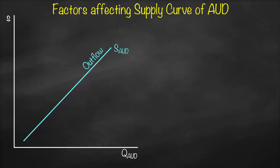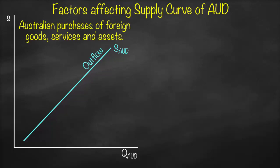Now let's talk about factors that shift the supply curve. Shifting the supply curve of a currency means Australians are willing to sell Australian dollars to buy foreign currency — because they want to purchase foreign goods, services, or assets, or invest overseas in foreign shares, bonds, or treasury bonds. Supply means outflow, so any item under current account or capital and financial accounts resulting in outflow affects the supply curve. Example: imports of goods and services. If you want to buy an iPhone, you sell Australian dollars to buy US dollars, which is outflow and affects the supply curve.